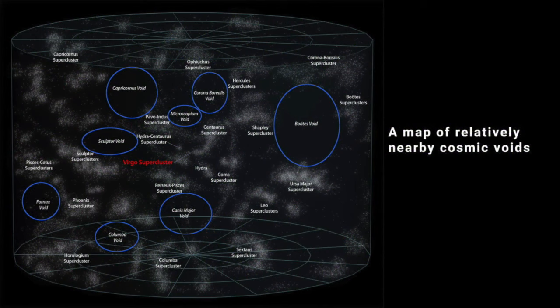They're the emptiest parts of the universe, although not entirely empty. They do contain a thin gruel of hydrogen gas and some scattered galaxies. But their density is typically less than 10% that of the universe as a whole. They can be anywhere from tens to hundreds of millions of light-years in diameter.